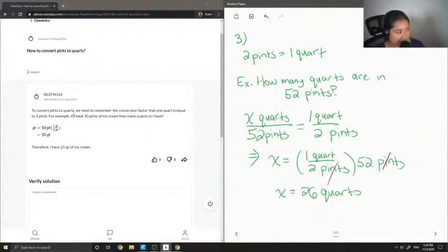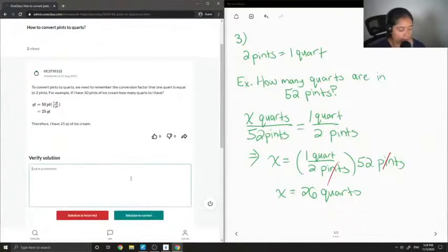It's a lot of ice cream, but basically you would have 25 quarts of ice cream. So this solution is correct.